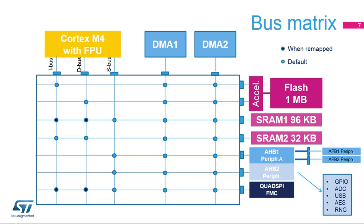The quad SPI and FMC banks can be read and executed through the system bus by default and can be remapped at address 0 to increase performance. The two DMAs can access all memories and peripherals. Different bus masters are able to access different memories and peripherals simultaneously via the bus matrix, enabling high performance compute operations.